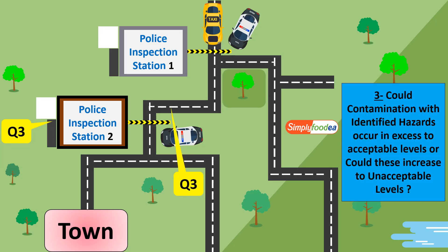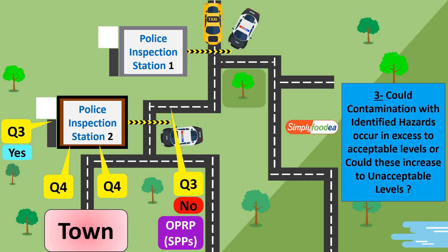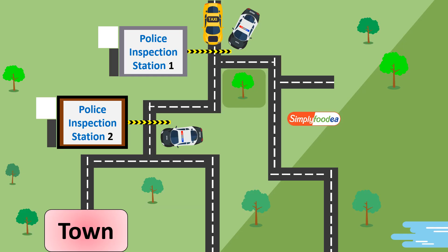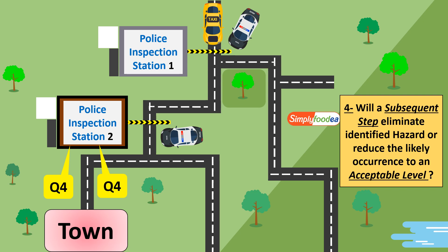Question number three: could contamination with identified hazards occur in excess of acceptable levels, or could this increase to unacceptable levels? The core of question number three: will the identified hazard increase to an unacceptable level? If it is not increasing, there is no risk, so it will be OPRP. But if it is increasing, we ask the last question: are there additional or subsequent steps that eliminate the identified hazard or reduce the likely occurrence to an acceptable level? If yes, there is another step, so this step will be OPRP. But if there is no other step to eliminate or reduce the hazard to an acceptable level, it will be a CCP.